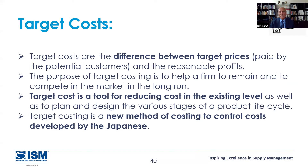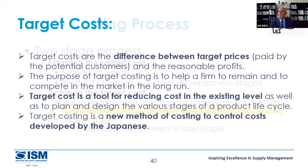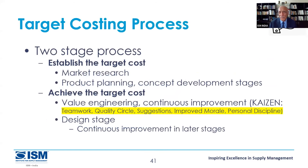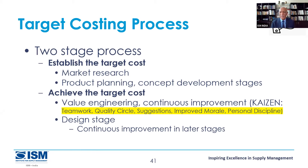Target cost process steps: establish the target cost, do extensive market research. For those 34 suppliers, we had to go into the detail of their manufacturing — can we use industrial engineering to cut cost, value engineering, improve the process? Concept development strategies. Value engineering played a big role, and continuous improvement is key. The Japanese use this concept extensively — when Honda shifted to the US in the 80s they did a lot of this. It's not a one-time exercise; the market is changing, so continuous improvement requires quality circles, suggestions, and personal discipline.